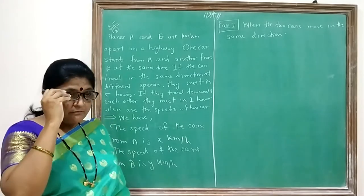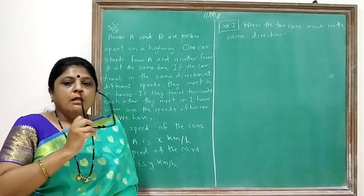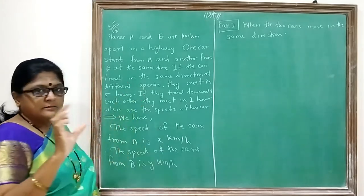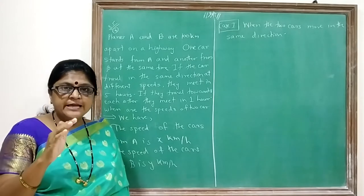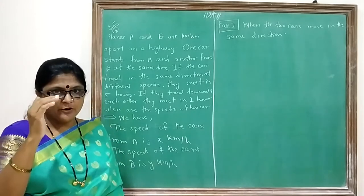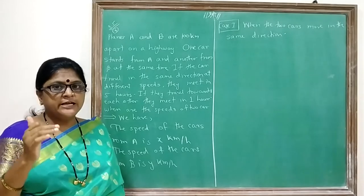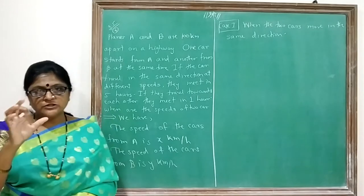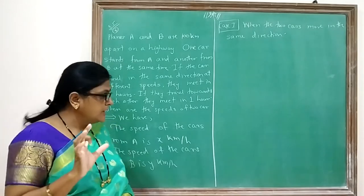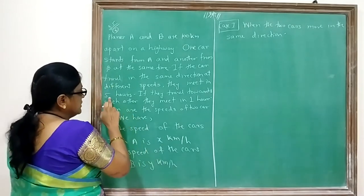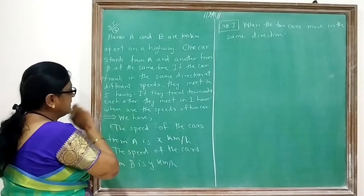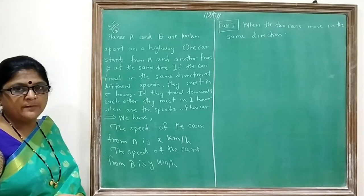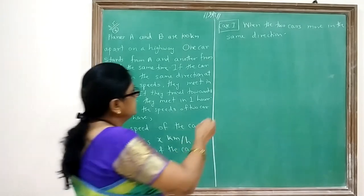The formula is V = D/T, meaning velocity equals distance divided by time. So your time is 5 hours and velocity of car A is X km per hour. First, you will draw the diagram.